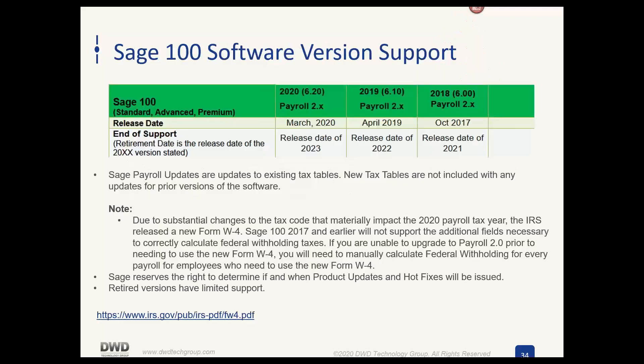A quick recap on supported versions: Sage 100 2020, 2019, and 2018 are currently supported. Sage 100 2018 will be the first to drop off support in 2021, and each year following, another version will drop off. This year, the IRS issued a new Form W-4. If you are running on Sage 100 2017 or prior, the new W-4 fields are not available and you need to upgrade.